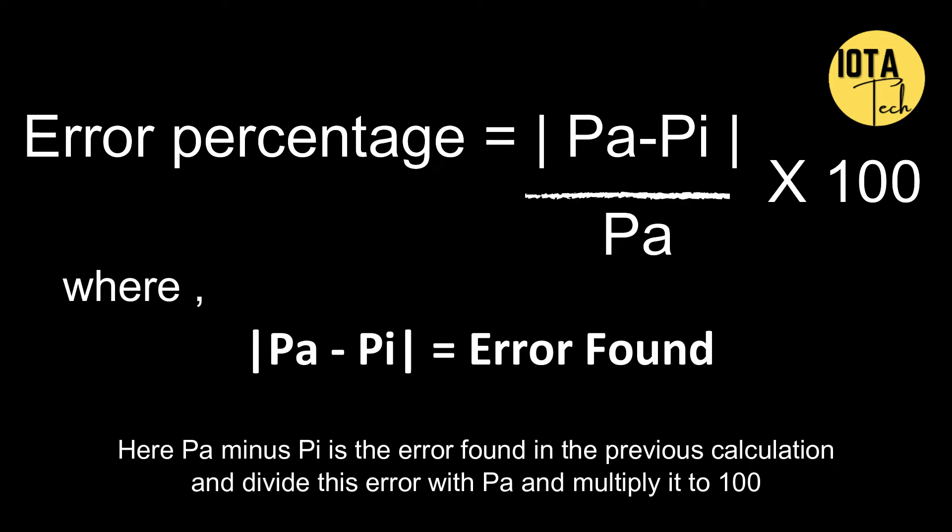Here PA minus PI is the error found in the previous error calculation and divide this error with PA and multiply it to 100 to get error percentage.